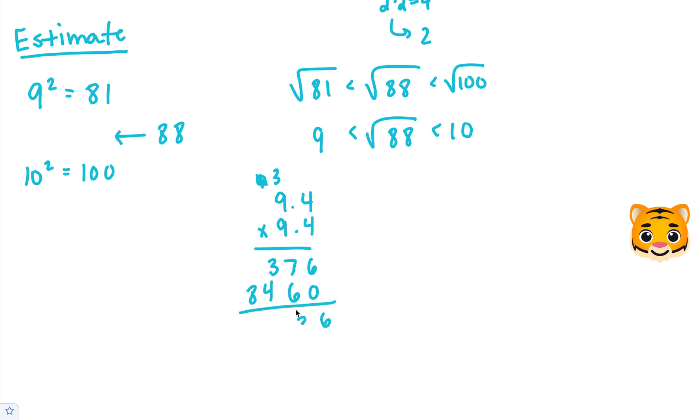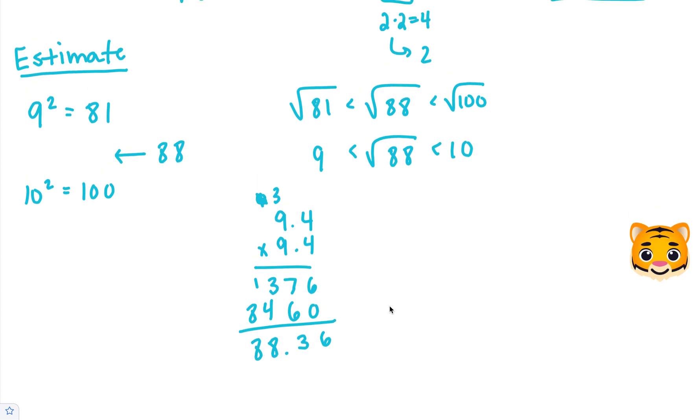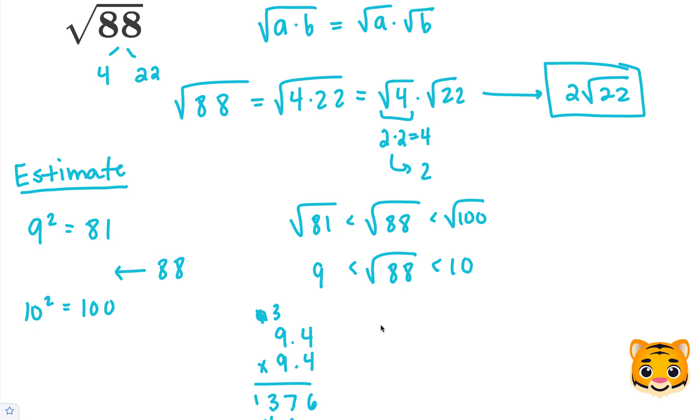When we add these together, we get 88.36, which is very close to 88. So we can say that 9.4 squared gives us about 88, meaning the square root of 88 is approximately 9.4.